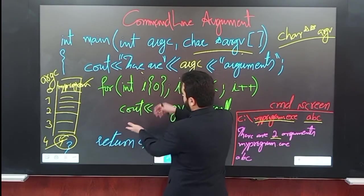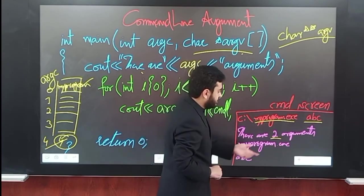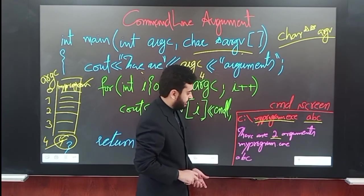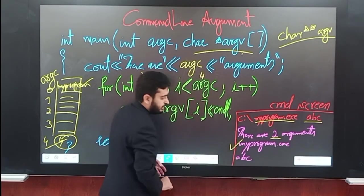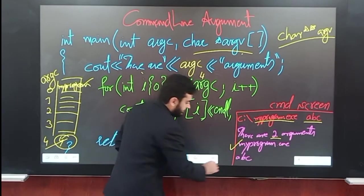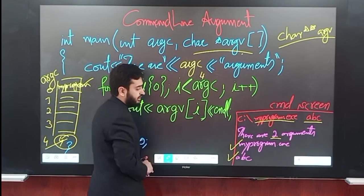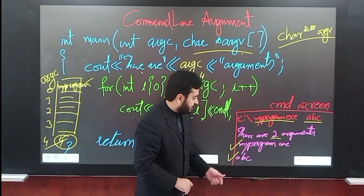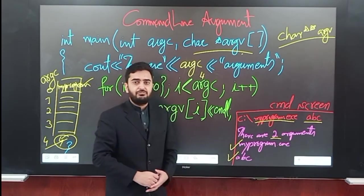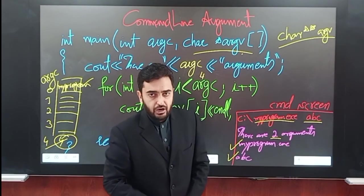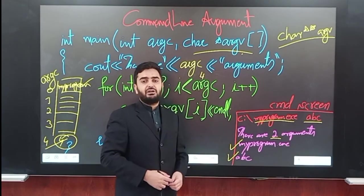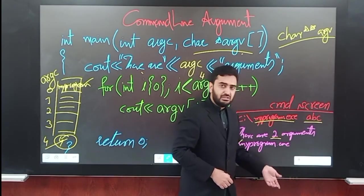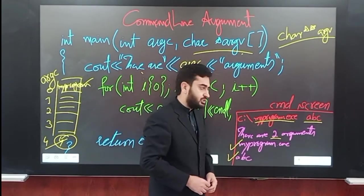When the loop executes with two elements in the array, the first value printed is the name of the file, and the second value is the argument the user inputted. The name of the file is always the first element of argv, and your inputted arguments occupy the second, third, and fourth positions.